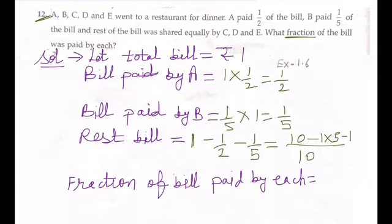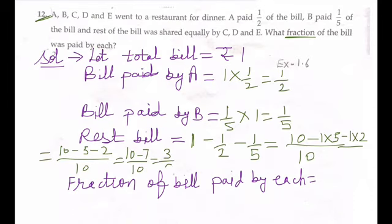So it will be 10 minus 5 minus 2 upon 10, which is 10 minus 7 upon 10, which is 3 upon 10. Now rest of the bill is shared by 3.